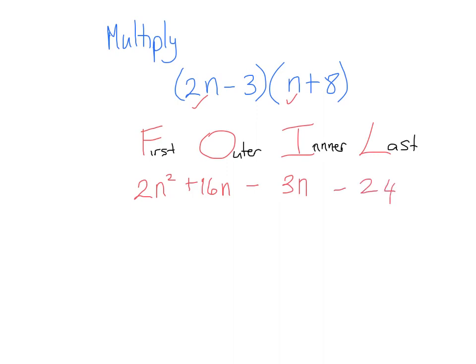So now that we have our first, our outer, our inner, and our last terms, we can join like terms as we did before. And this is actually a little simpler than it was before. So we have just the 16n and the negative 3n that's like. Everything else is just a rewrite. So we're rewriting 2n squared and we're rewriting the negative 24. And we're joining those two like terms in the middle. And so 16n minus 3n gives us plus 13n.